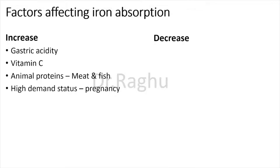The fourth factor is high demand status — whenever the body is demanding more iron, as happens during pregnancy, lactation, or when the body is in a growing phase. Last but not least, when the body's stores of iron are already depleted, the body tries to compensate by increasing the absorption of iron.